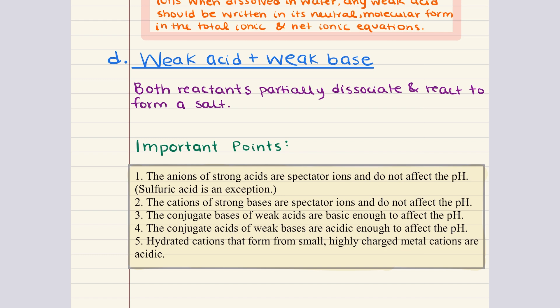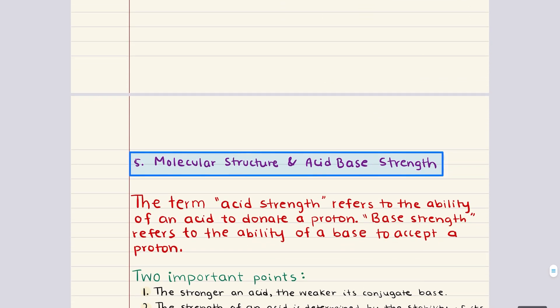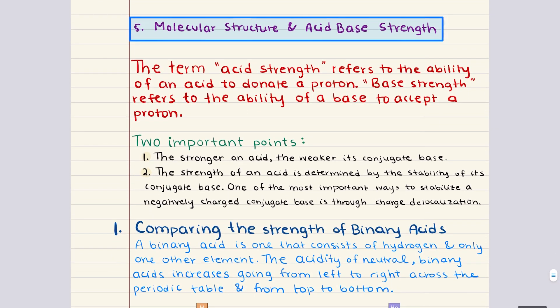With that, we have completed objective four, and we can move into our last and final objective, which is titled molecular structure and acid-base strength. Here we're going to be discussing how molecular structure influences acid and base strength, and this is a critical aspect of acid-base chemistry because the ability of a molecule to donate or accept a proton depends heavily on its structure and the stability of the resulting species.